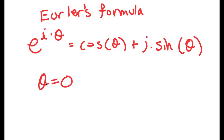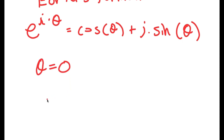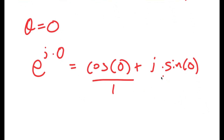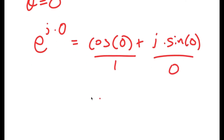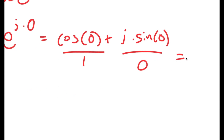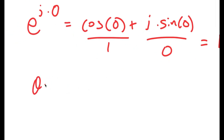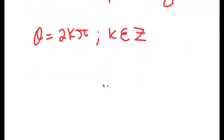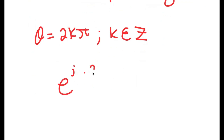Let's say that theta is equal to 0. So now I get e to the power of i times 0 is equal to cosine of 0 plus i times sine of 0. Cosine of 0 is 1, and sine of 0 is 0. So I get this all is equal to 1. Now, what if we say theta is equal to 2kπ, where k is just a substitution for all real numbers? So now I get e to the power of i times 2kπ is equal to 1.